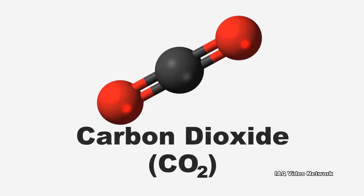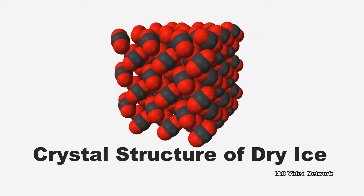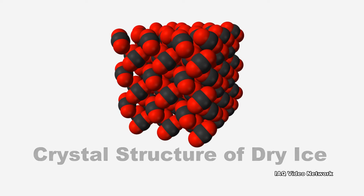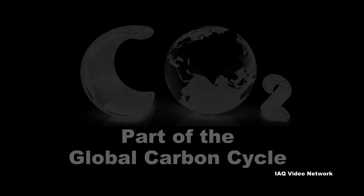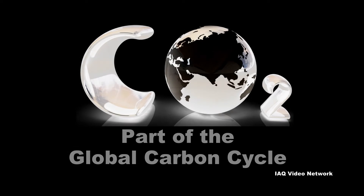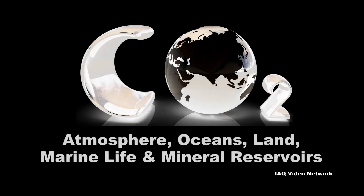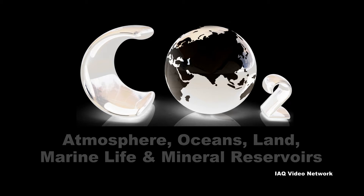Carbon dioxide is a colorless, odorless gas that naturally occurs in the atmosphere as a trace gas. In its frozen form, it is known as dry ice, but in the atmosphere, carbon dioxide is part of the global carbon cycle between the atmosphere, oceans, land, marine life, and mineral reservoirs.